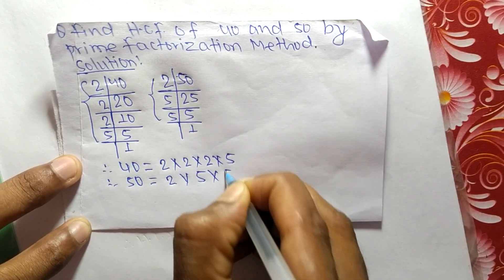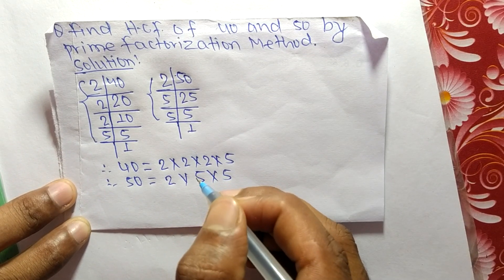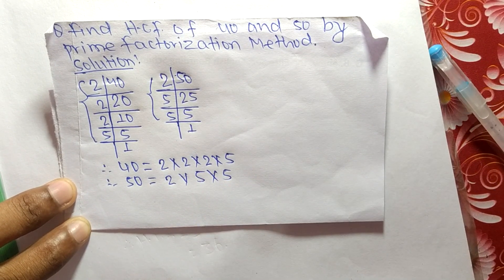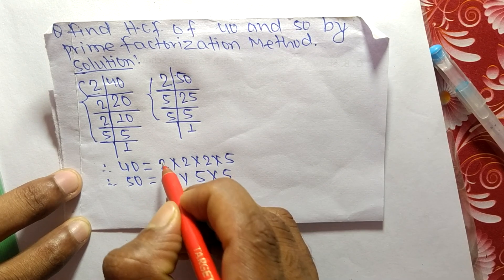Now we have to find out the common factors in these prime factors. The common factor here is 2, and the second common factor is 5.